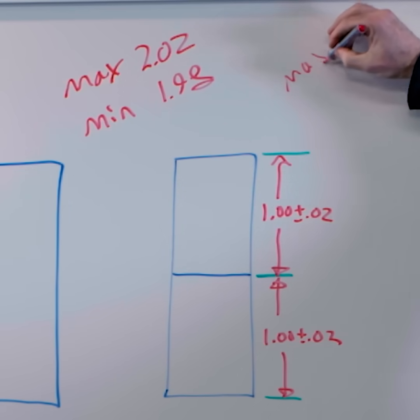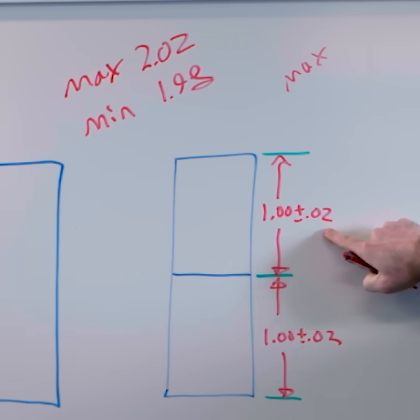So in this example, our maximum is going to be 1.02 plus 1.02 for 2.04, right? It'd be the same minus 40 thousandths for the minimum.